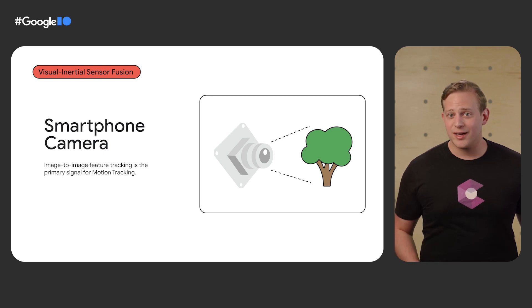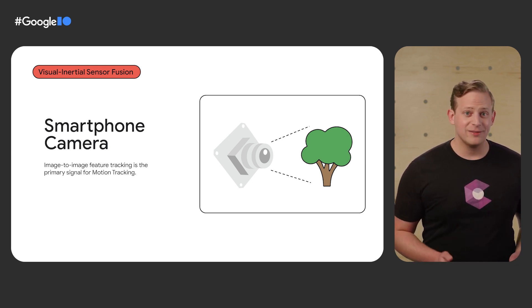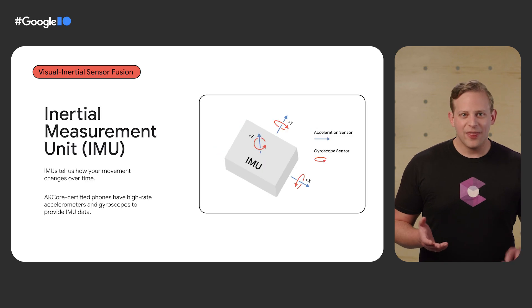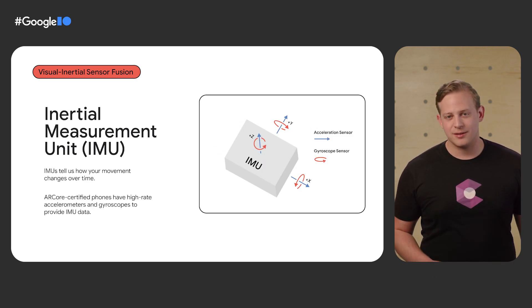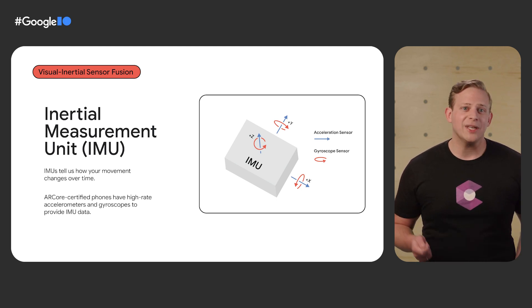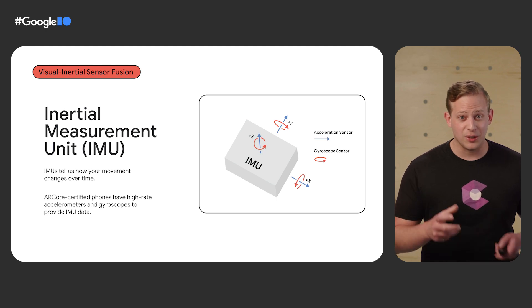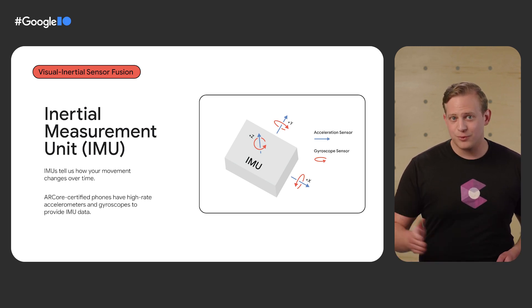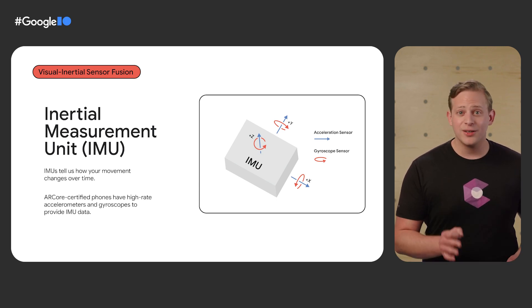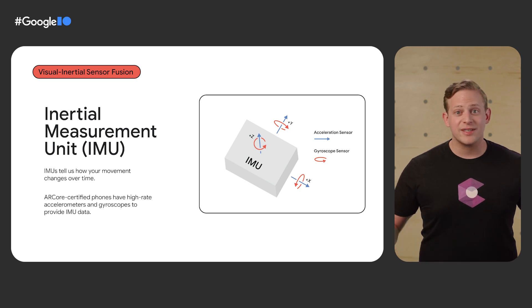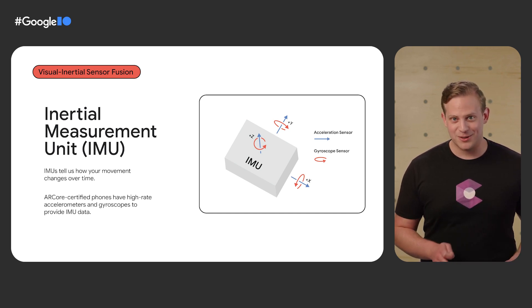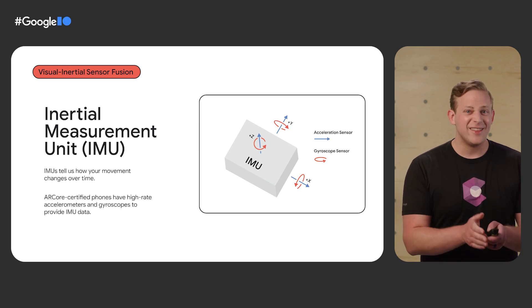ARCore has a strategy to make sure that your AR content doesn't disappear every few seconds. This is called visual inertial sensor fusion. The camera, typically capturing frames at at least 30 frames per second, is the visual part. The inertial part comes from an inertial measurement unit, or IMU, that consists of an accelerometer and a gyroscope. These give us linear acceleration and rotational velocity of your phone along three different axes, and all ARCore certified phones provide these measurements at over 100 times per second. By adding up these measurements over time — usually called IMU integration — we can get a pretty good idea of how your phone has moved between camera images, or even across several blurry images.